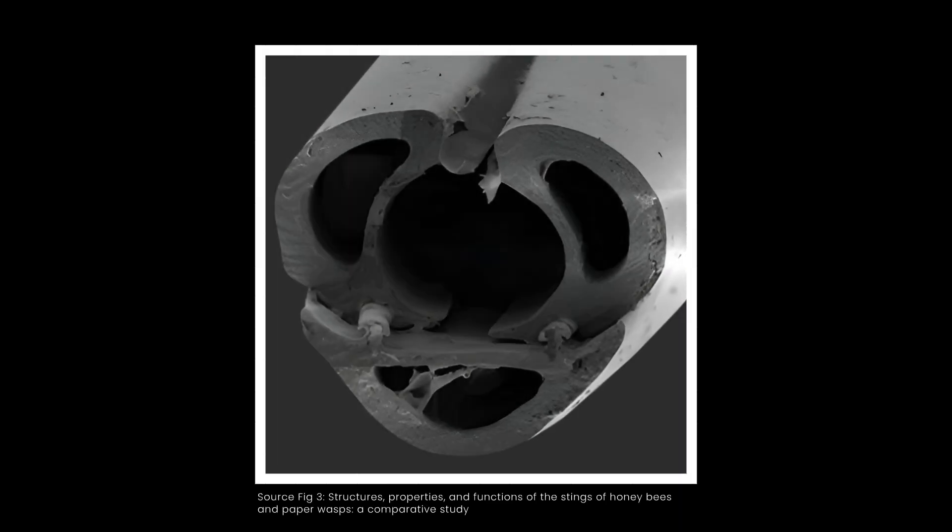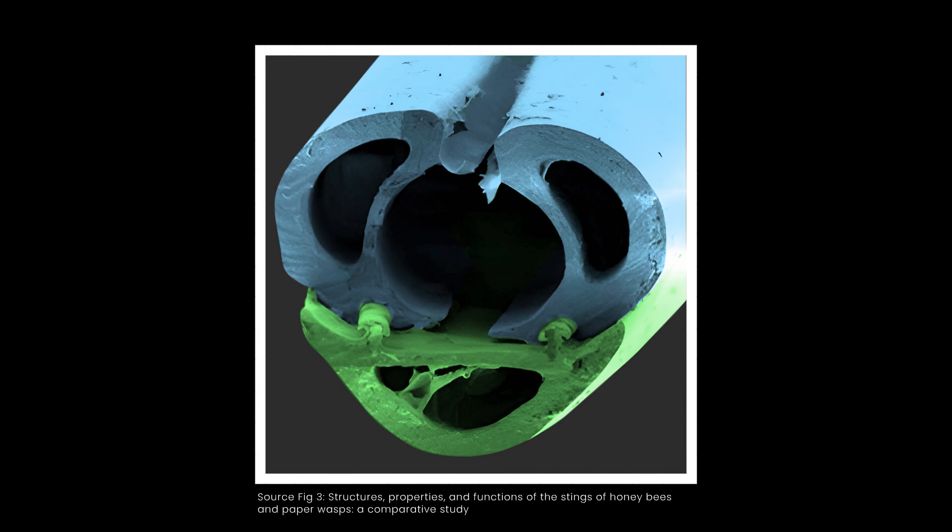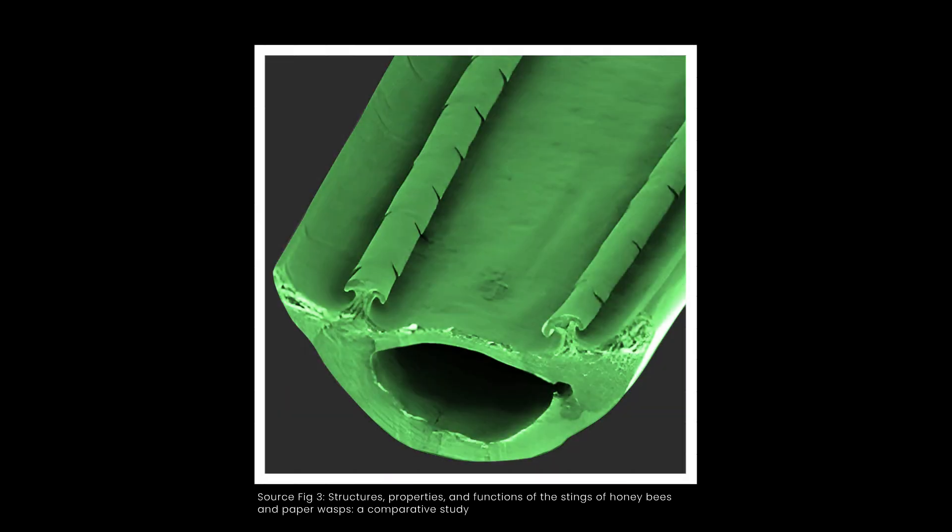This is a cross-section of the stinger, as seen through an electron microscope. On the top here are the lancet shafts. On the bottom is the stylus, or what I've been calling the stabilizing rod. Now, check this out. Each lancet moves along runners of the stylus. It's a tongue-and-groove system. That joint is tightly sealed shut. Here's what those runners look like if the lancets are removed.